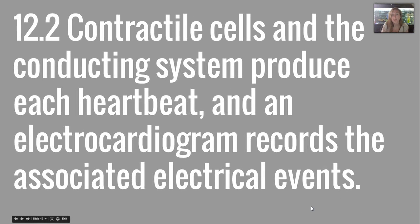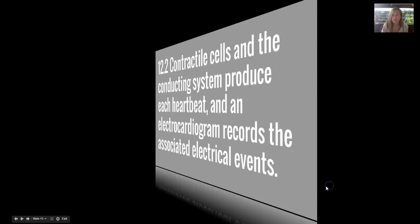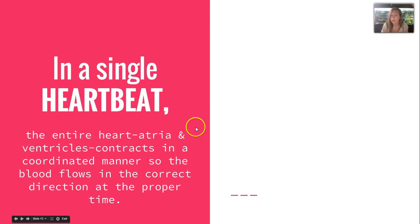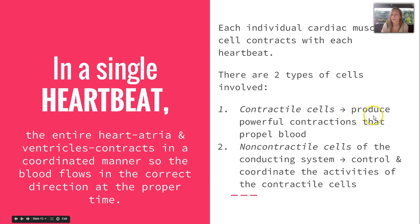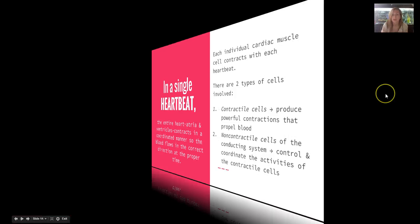Moving on to Section 12-2, we'll talk about specialized cells that produce a heartbeat. In a single heartbeat, the entire heart — atria and ventricles — contracts in a coordinated manner so blood flows in the correct direction at the proper time. There are two types of cells: contractile cells, which produce powerful contractions, and non-contractile cells of the conducting system that control and coordinate the activities of the contractile cells.